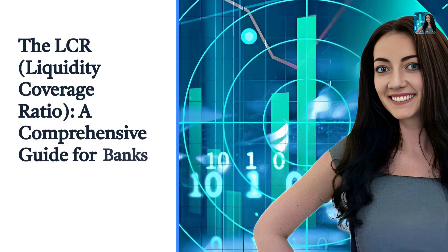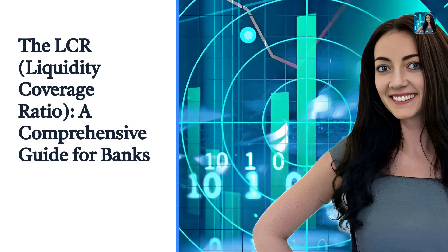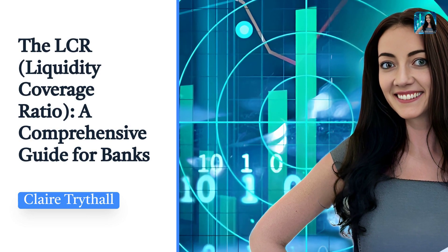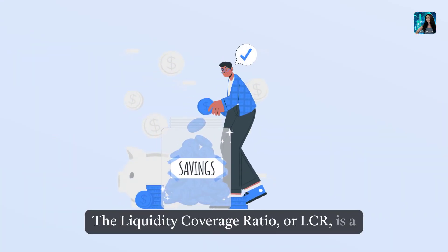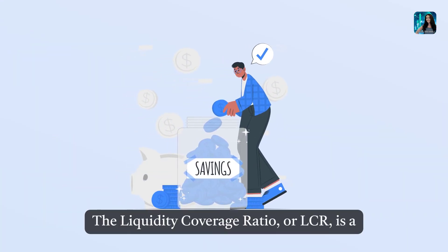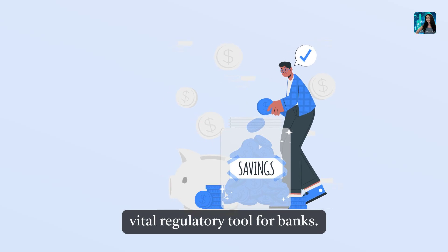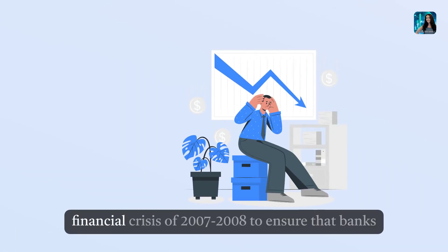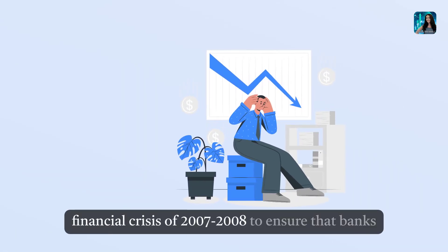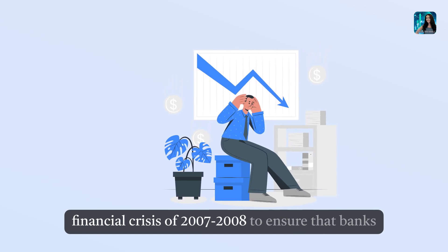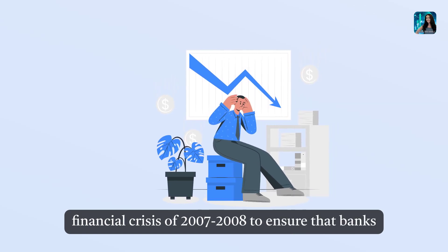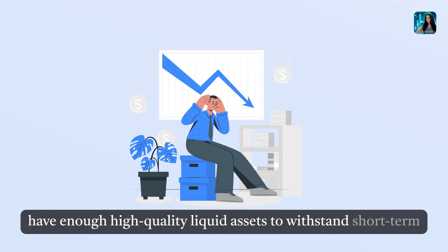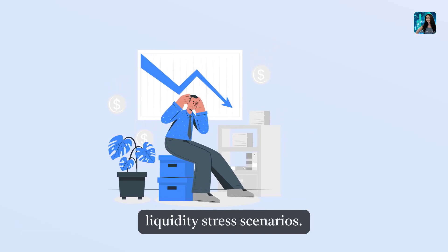The LCR, Liquidity Coverage Ratio — a comprehensive guide for banks. The Liquidity Coverage Ratio is a vital regulatory tool for banks. It was introduced in response to the global financial crisis of 2007-2008 to ensure that banks have enough high-quality liquid assets to withstand short-term liquidity stress scenarios.